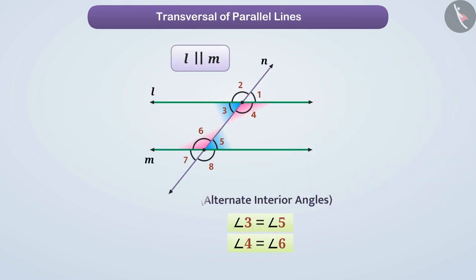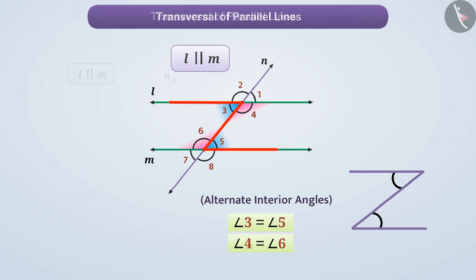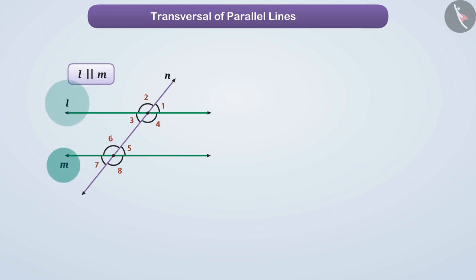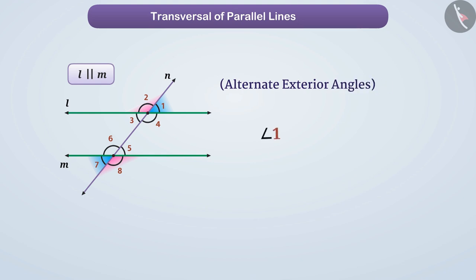To identify a pair of alternate angles, you can take the shape of Z into consideration. Similarly, the pair of alternate exterior angles formed by the transversal of parallel lines is also equal. Hence, angle 1 is equal to angle 7, and angle 2 is equal to angle 8.